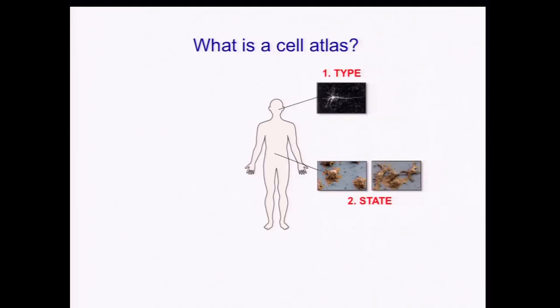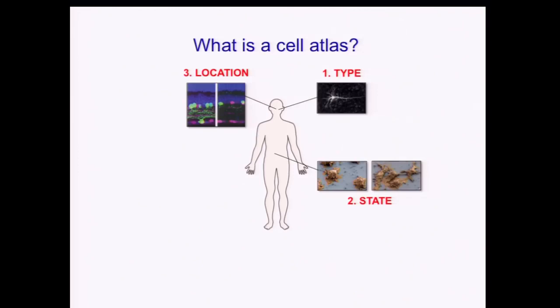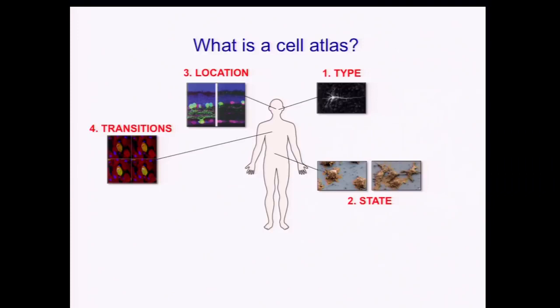We also want to be able to distinguish different states for the same cell type — for example, an immune cell that is completely naive compared to the same immune cell type after it had encountered a bacterium. We want to position all of these cells in their three-dimensional location, identify salient features as cells undergo dynamic transitions during differentiation or activation, and ideally trace their entire lineage, as can be done for the worm C. elegans.